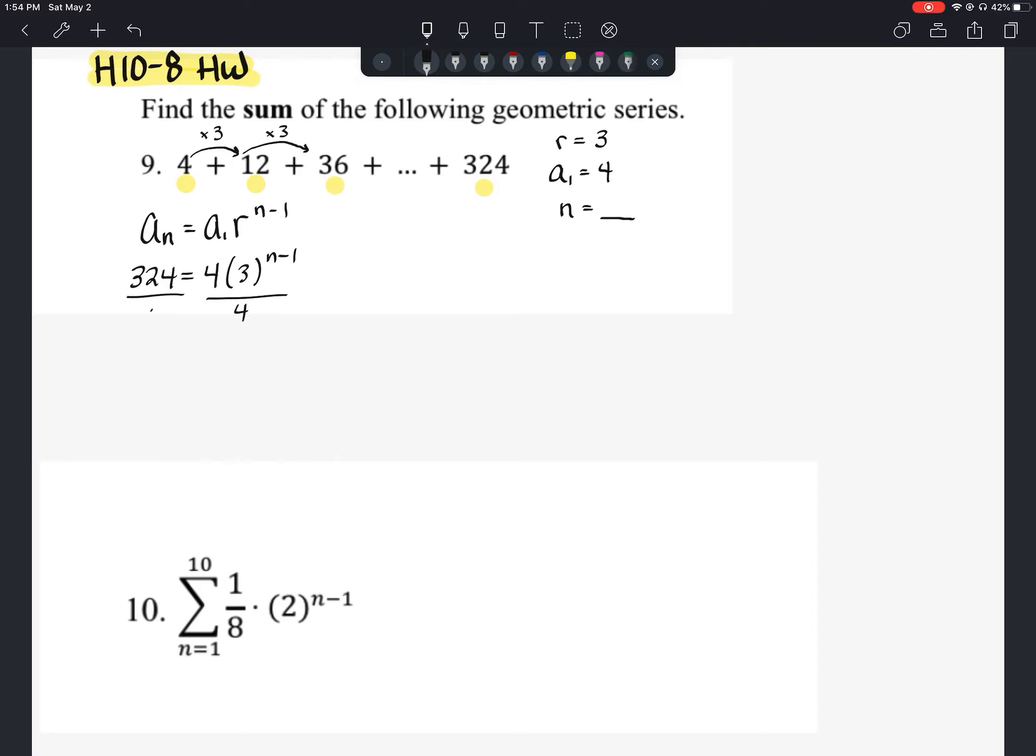Divide each side by 4. 324 divided by 4 should be 81. And that should equal 3 to the power of n minus 1. And now you can either take the log of each side or rewrite this in its log form.